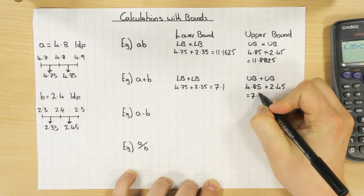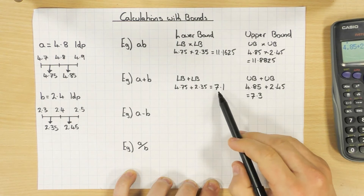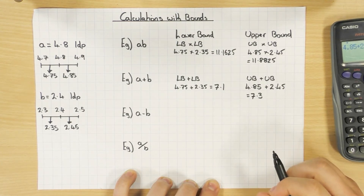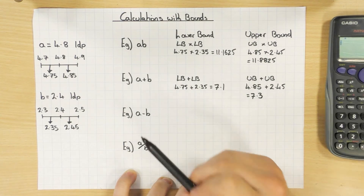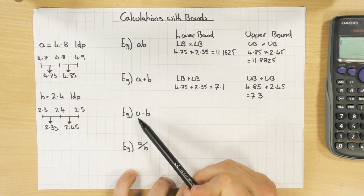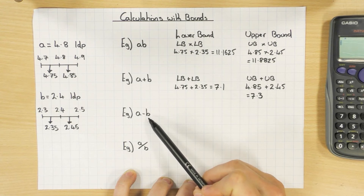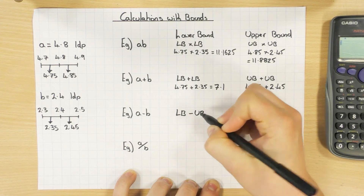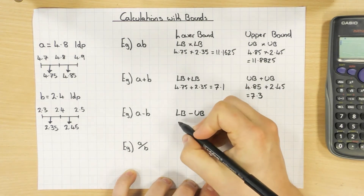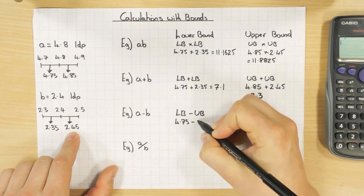You can use the error interval with inequalities to represent lower and upper bounds, as covered in another video. Now, subtraction is where it gets trickier. To get the lower bound of a − b, you want the first number as small as possible and the number you're taking away as large as possible. So it's lower bound minus upper bound.